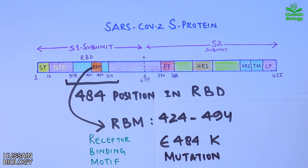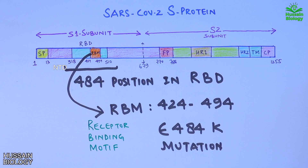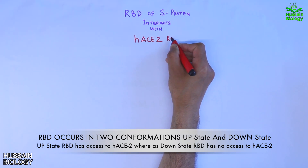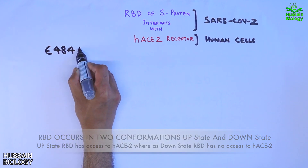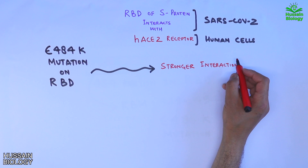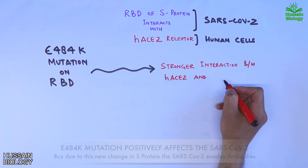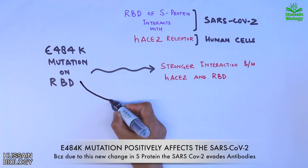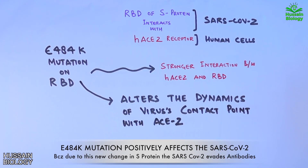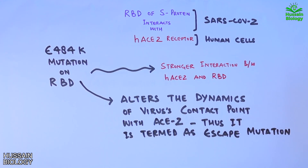The RBD of the S protein interacts with the human ACE2 receptor. It has been discovered that the E484K mutation on the RBD leads to a stronger interaction between the ACE2 receptor and the RBD. Moreover, this mutation alters the dynamics of the virus's contact point with the ACE2 receptor, which is why it is termed an escape mutation — the immune system now has to recognize a different antigen since one amino acid change alters the whole S protein sequence.